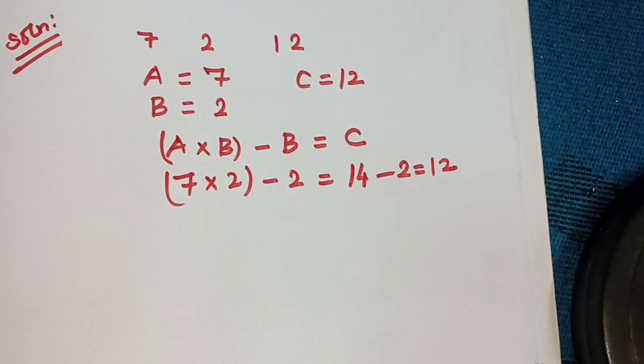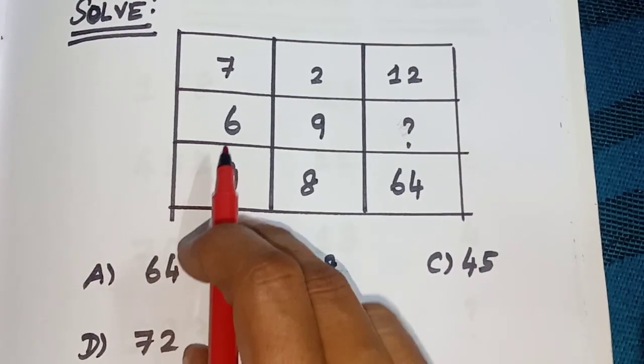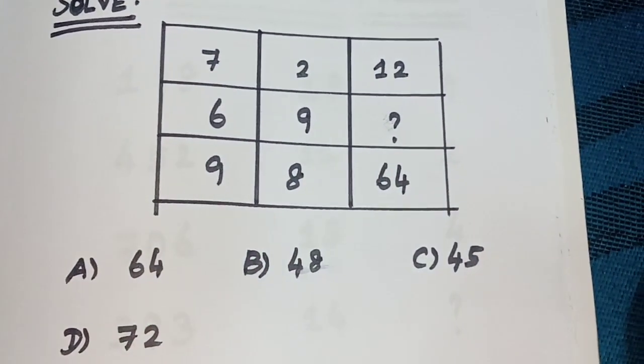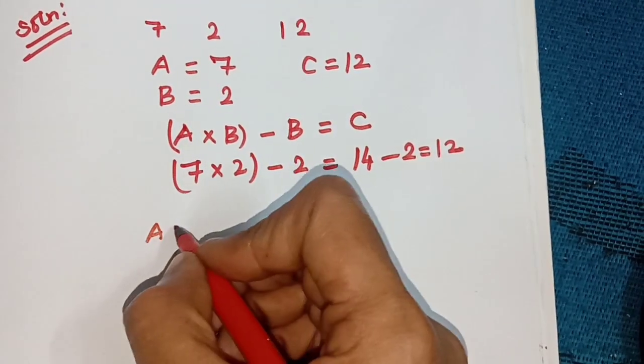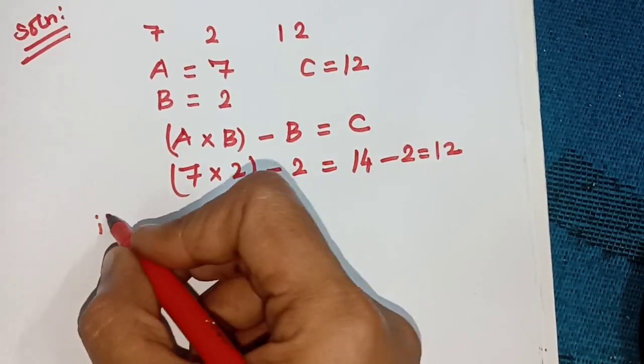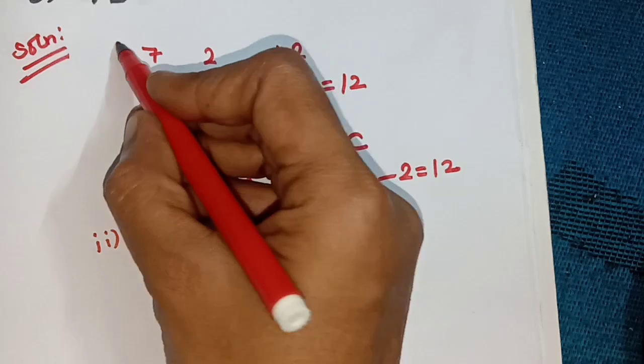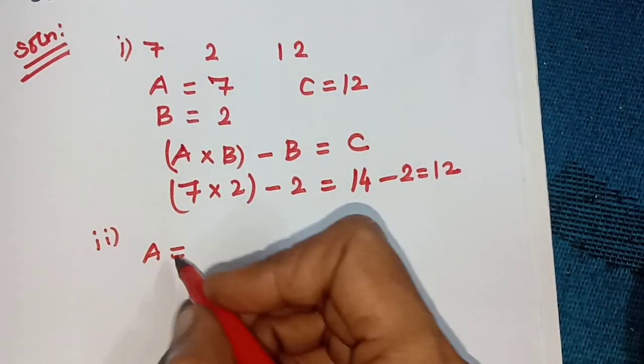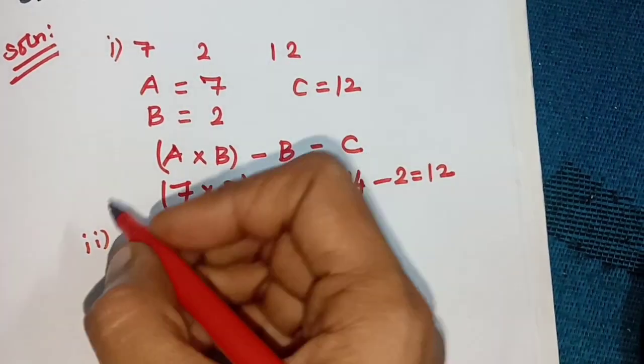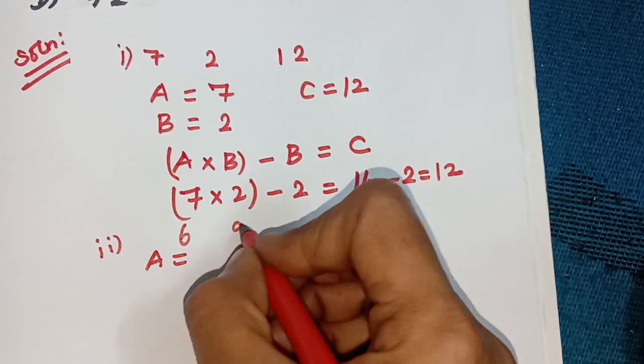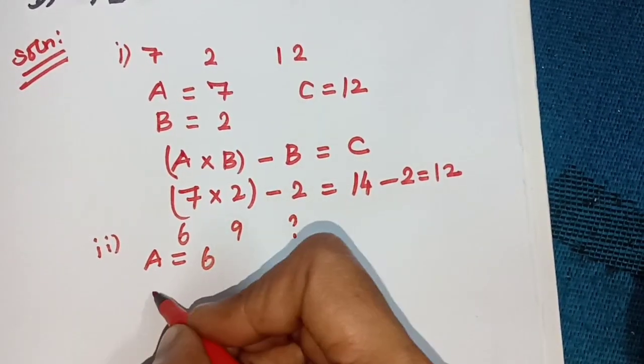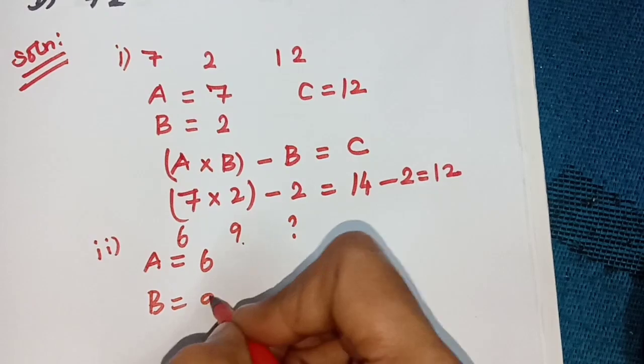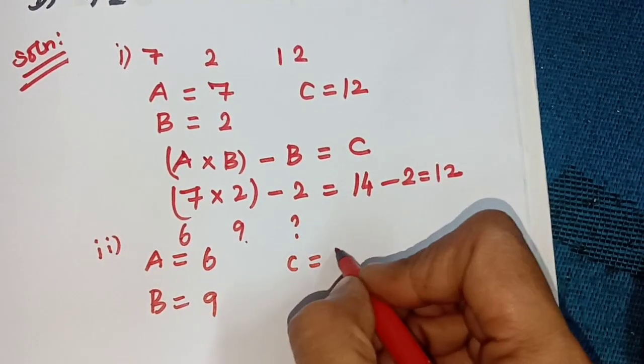Using the same procedure for the second one: 6, 9, question mark. This is the second one. A is 6, B is 9, and C equals question mark.